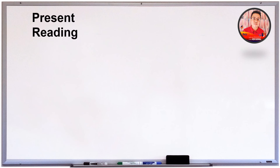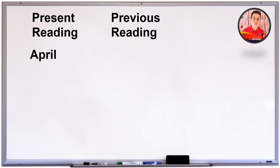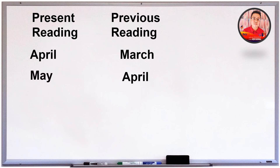Tandaan ninyo: ang present reading ay para sa kasalukuyang buwan at ang previous reading naman ay yung reading noong nakaraang buwan. Halimbawa, sa buwan ng April, ang present reading ay yung reading sa April at ang previous reading ay yung reading noong March. Pagdating naman ng May, yung reading sa May ang magiging present reading at ang previous reading niya ay yung reading noong April. Pagdating naman ng June, yung reading sa June ang magiging present reading at ang previous reading niya ay yung reading noong May.